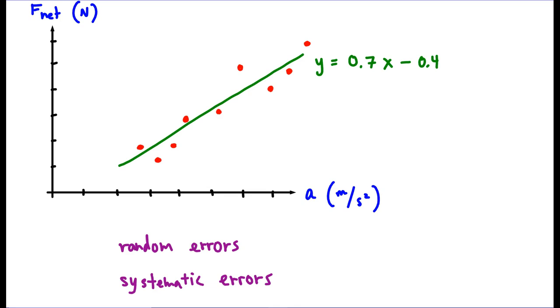So how would we tell that there were random errors? Notice how the data fluctuates away from the line. Sometimes it's too high, sometimes the data point is too low, and the amount of fluctuation, the amount of error changes. That's a sign of random error. The data isn't on the best fit line.